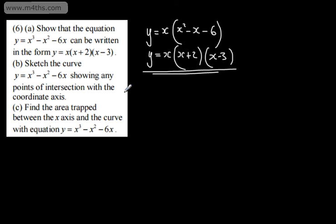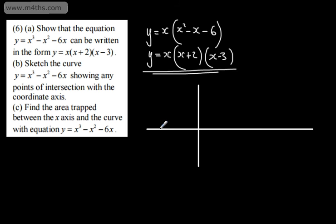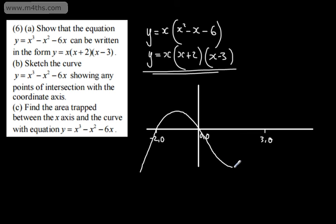In part b, we need to sketch the curve y = x³ - x² - 6x, showing any points of intersection with the coordinate axes. From our work with cubic equations, we have three points of intersection where y = 0: at x = -2 (the point (-2, 0)), the origin (0, 0), and the point (3, 0). A positive cubic starts in the third quadrant, comes through (-2, 0) to a maximum, turns through the origin, round to a minimum, then back through the x-axis at (3, 0).